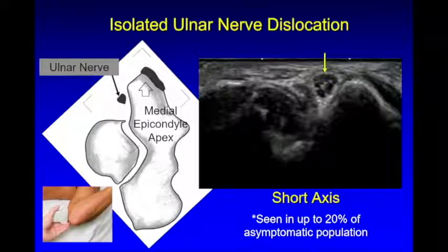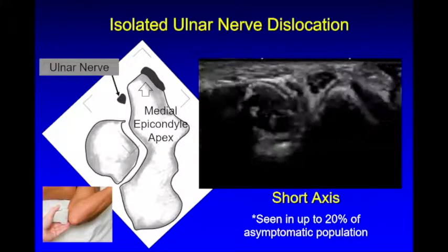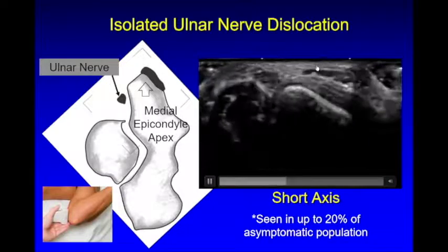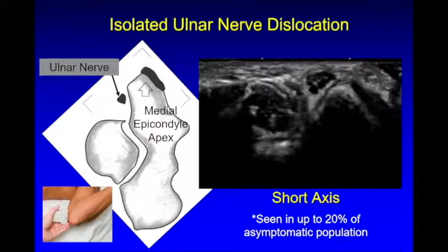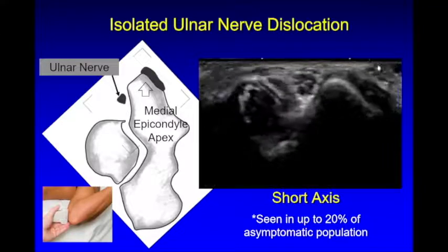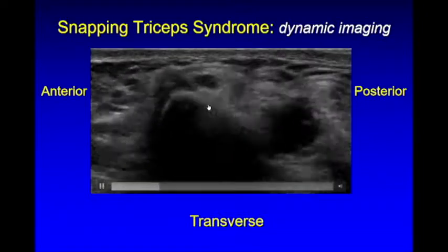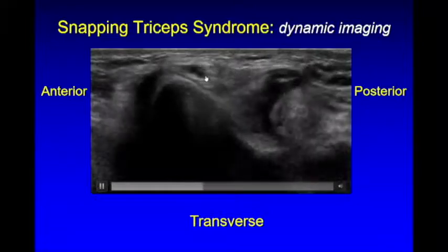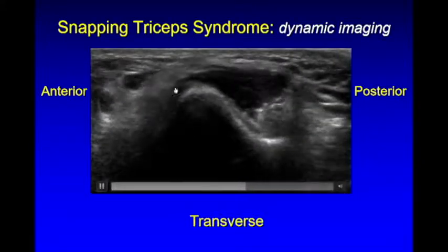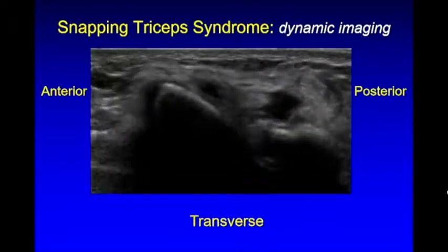Regarding dynamic imaging of the ulnar nerve: normally when we flex the elbow, the nerve should stay behind the epicondyle. In the abnormal situation, the nerve will come out anteriorly. This occurs in up to 20% of the asymptomatic population. When scanning here, don't put too much pressure with the transducer, as you can inhibit the nerve from snapping back and forth. This must be differentiated from snapping triceps syndrome, where the nerve dislocates but the triceps also shows subluxation. Here with the elbow in neutral the ulnar nerve is in position, and on flexion there are two distinct snaps as the triceps comes over and then slides back.